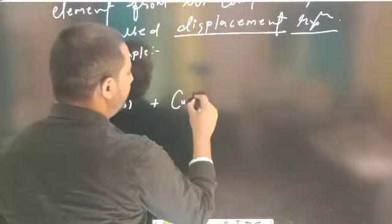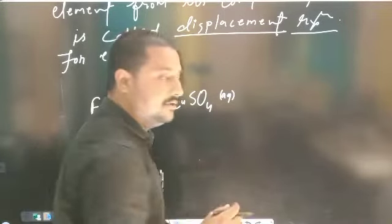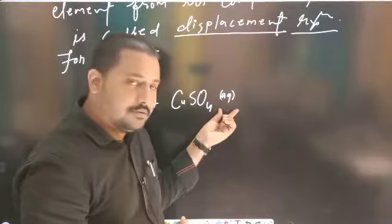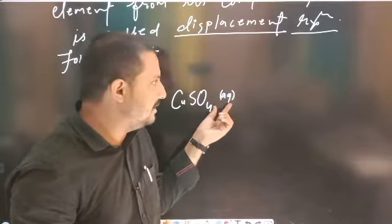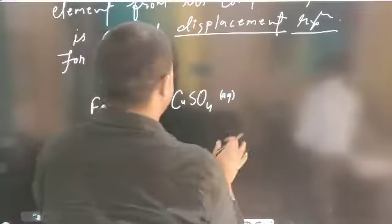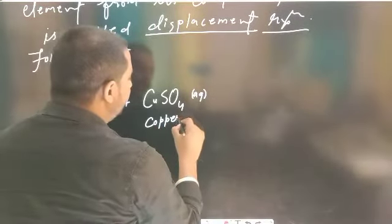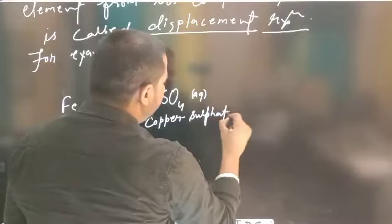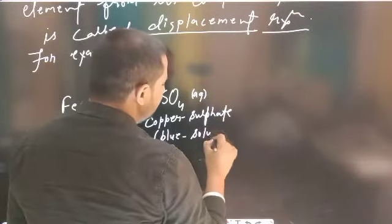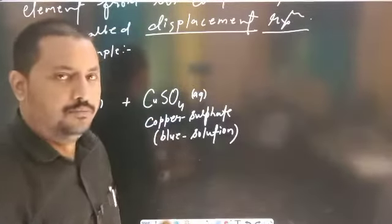For example, dekhiye — yahan ek chemical equation hai. Aap jaante hain iron solid hai aur copper sulfate ek salt hai. Jab copper sulfate salt ko aap paani mein dissolve karte hain, to ye aqueous form mein aa jaata hai. Copper sulfate ke jo crystals hote hain, woh blue color ke hote hain — to blue solution appear hoga aapko, copper sulfate ka.